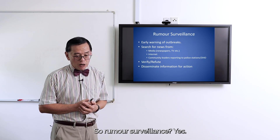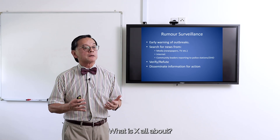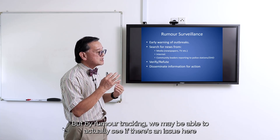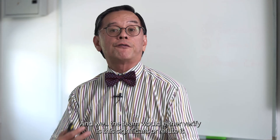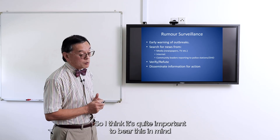Rumour surveillance is important as it can provide early warning of an outbreak. A dedicated team searches news media and newspapers for reports of something unusual happening. This is particularly relevant given discussions around Disease X — Malaysia is preparing to plan for this, even though we don't yet know exactly what it will be. Through rumour tracking we may be able to identify whether there is an issue, with community leaders and the team verifying or refuting significance, and disseminating information for action.